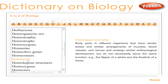Homologous structures: body parts in different organisms that have similar bones and similar arrangements of muscles, blood vessels, and nerves, and undergo similar embryological development but do not necessarily serve the same function. Example: the flipper of a whale and the forelimb of a horse.